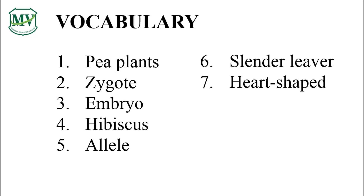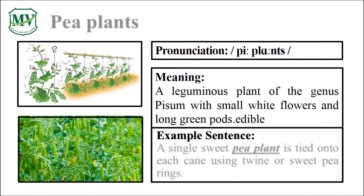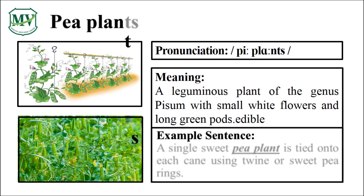Are you ready? Please say the word with me. Pea plants. Let's say it again — pea plants. P-E-A-P-L-A-N-T-S. Pea plants. That was incredible! Can you say the word by yourself?